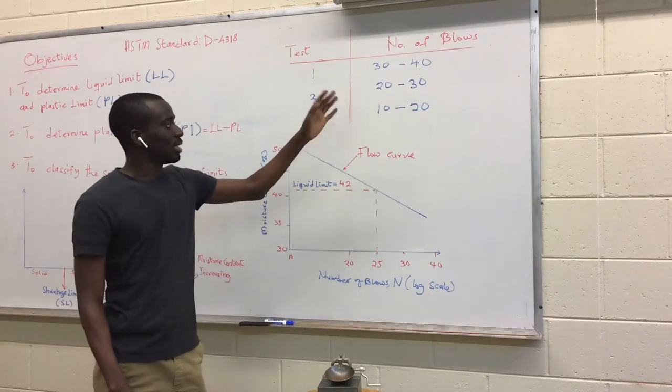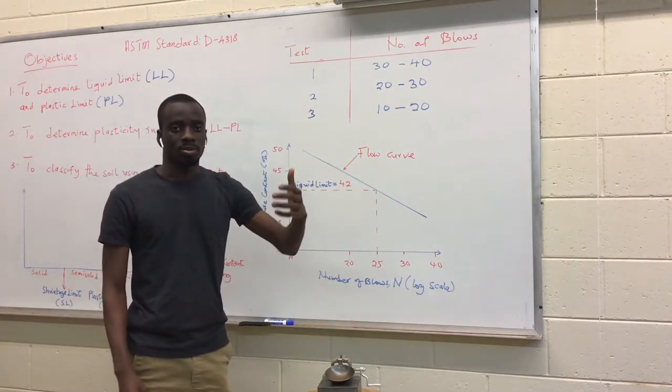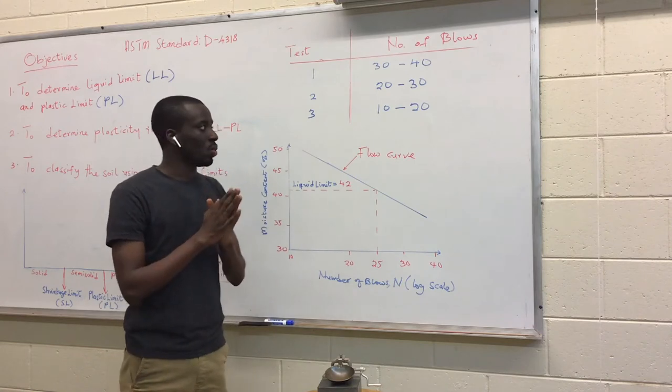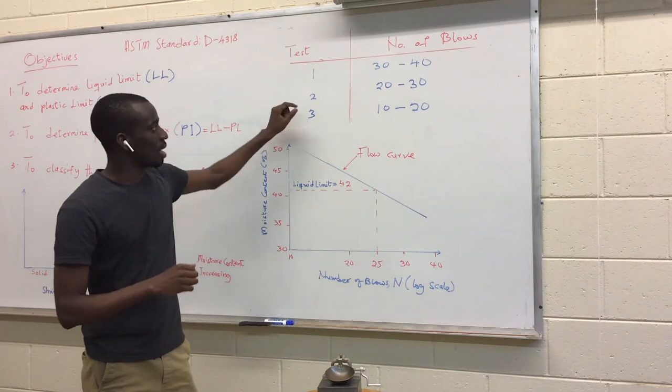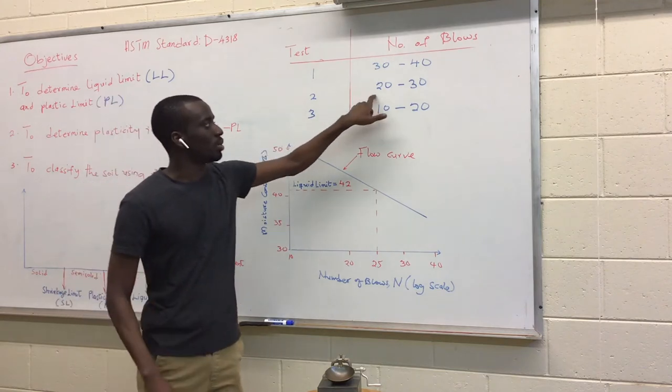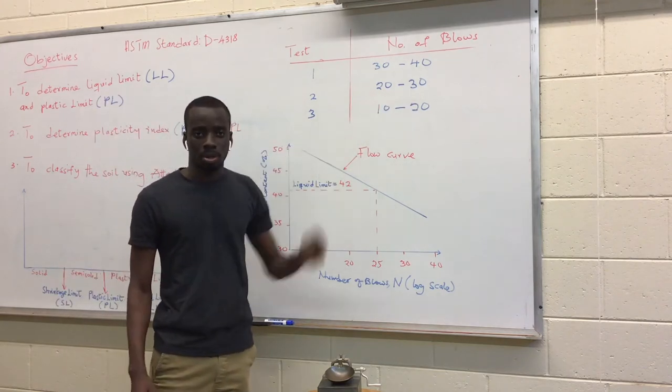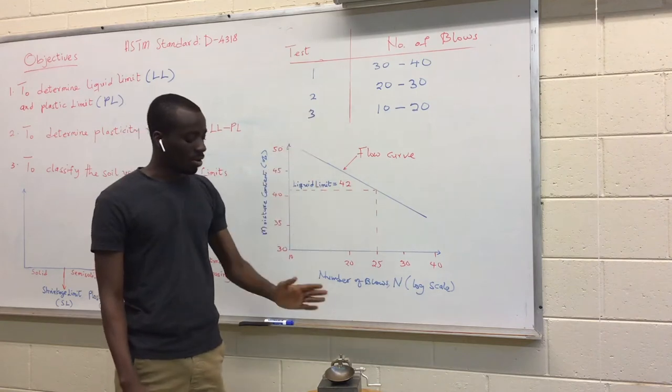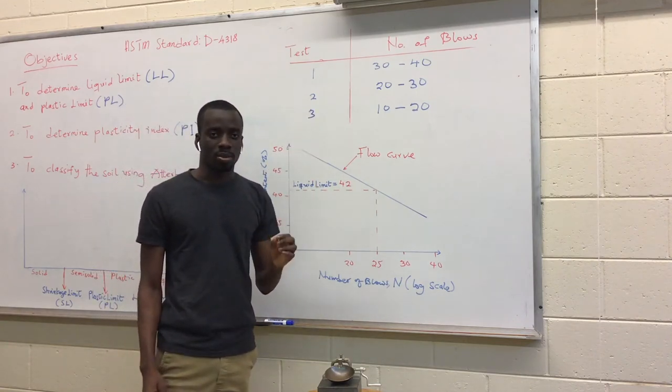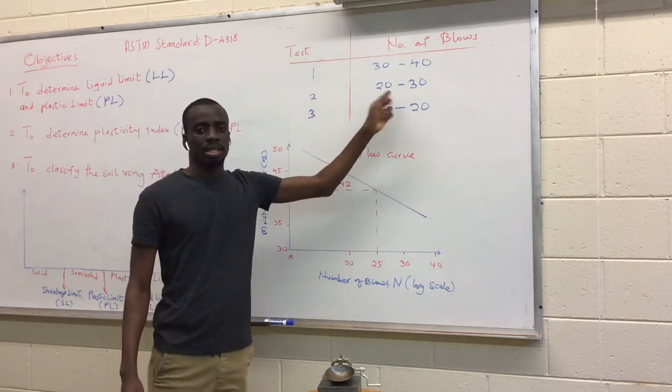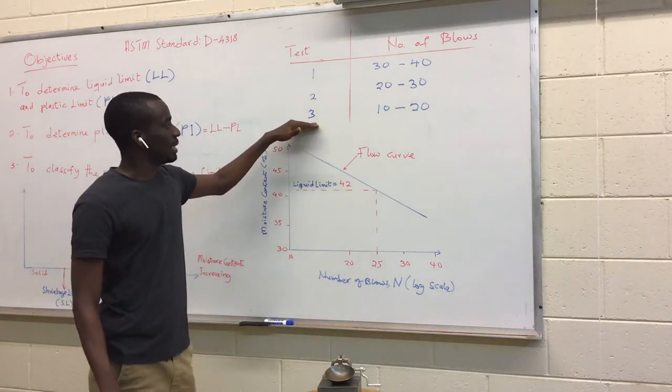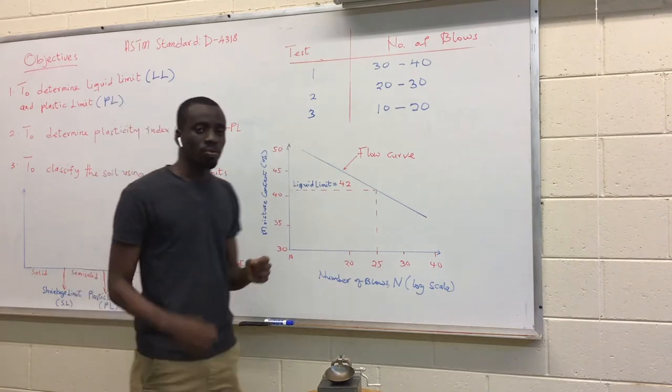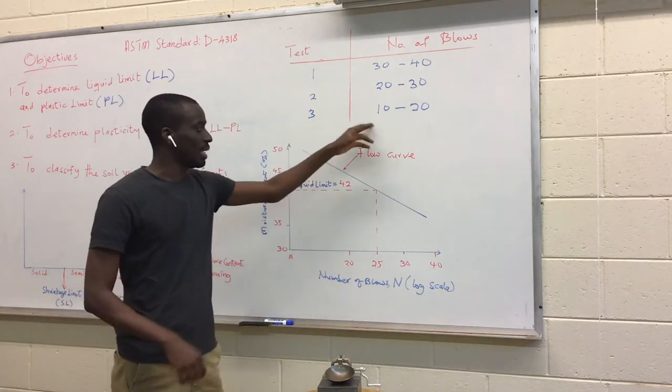Now after that, we are going to increase the moisture content, which means it is easier for the grooves to close. So we should require a lesser number of blows to close that. The second test has to require only 20 to 30 blows. Then we are going to wash the apparatus, clean it and perform the third test and make sure that the groove closes between the blows of 10 and 20.